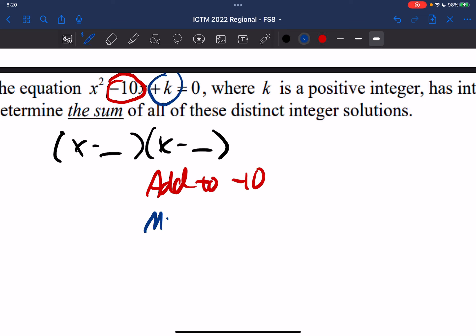This number here tells us they have to multiply to, now we don't know what the number is, but we do know it's a positive integer.